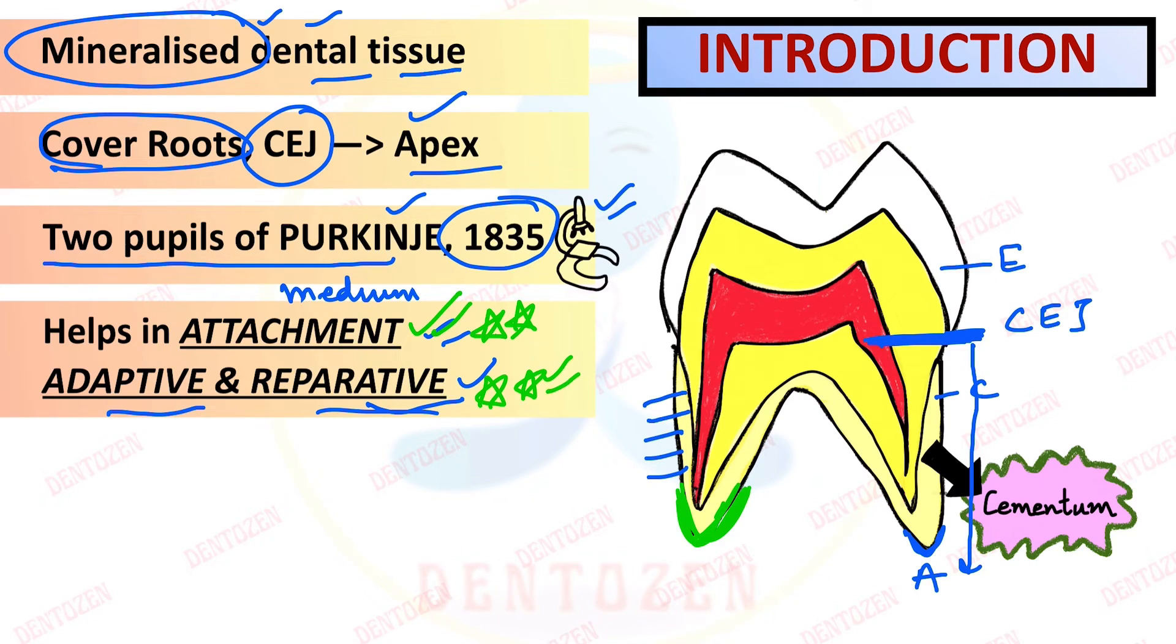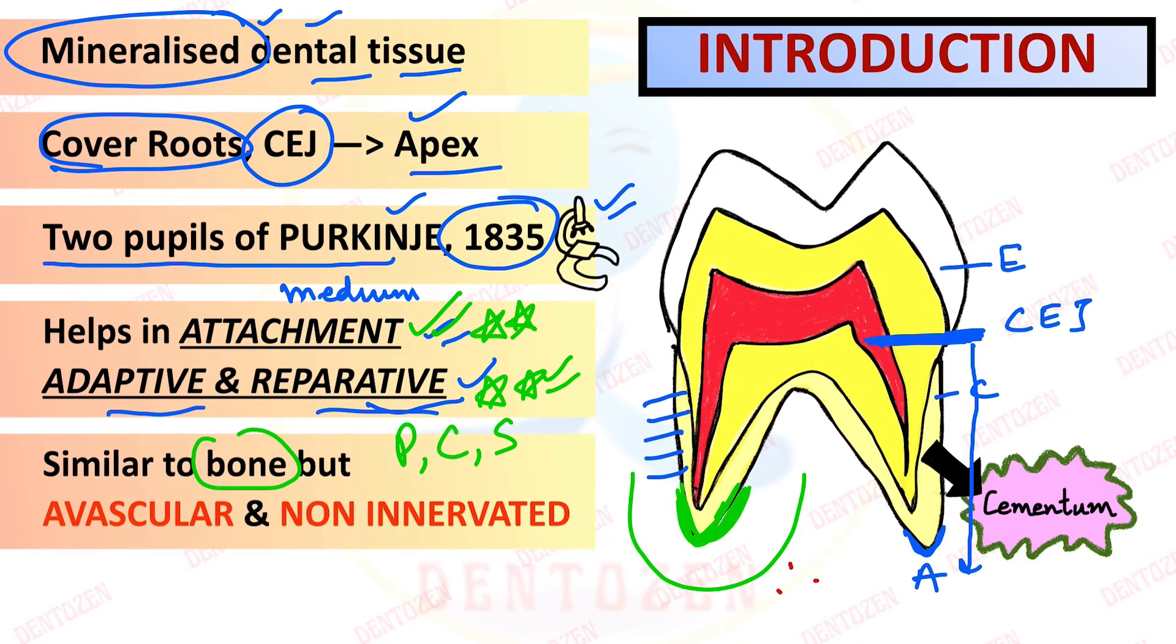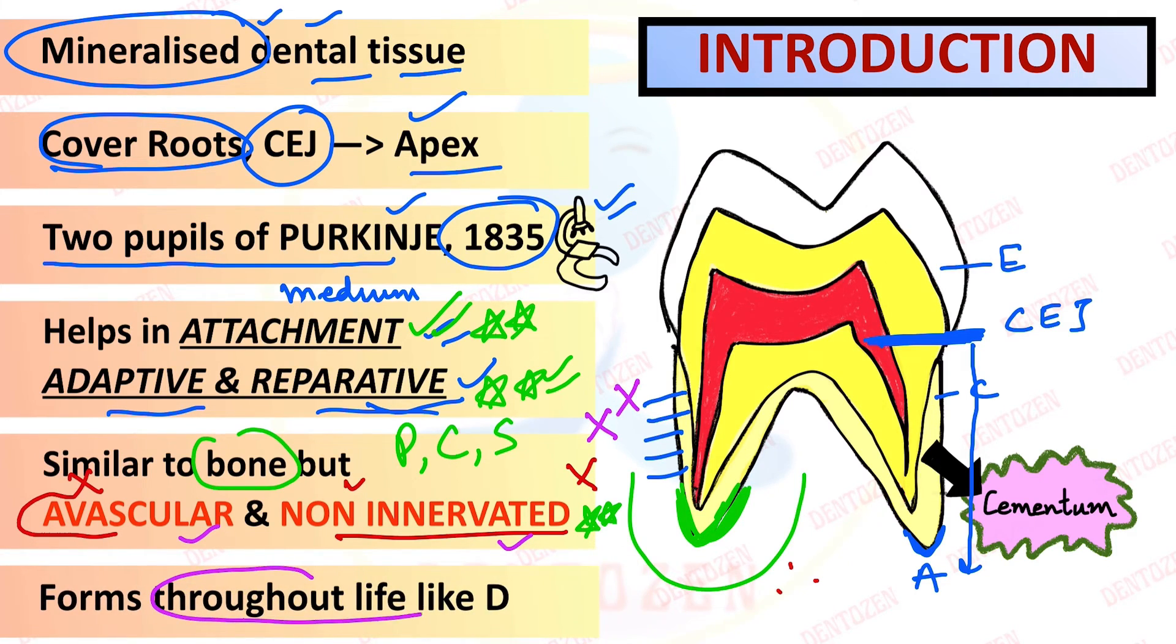Now these properties of the cementum are very much similar to the bone. So it is physically, chemically, and structurally similar to bone. But it is also different from the bone. How is it different? It is avascular, that is no blood vessels are there, and no nerves are there, non-innervated. That can be your important entrance question and viva question. Whether cementum has vessels and nerves. No vessels, no nerves. And it keeps forming throughout life like dentine.